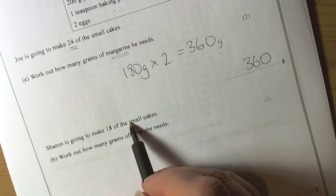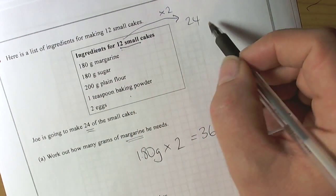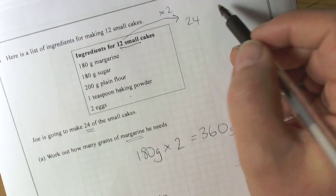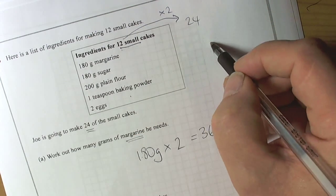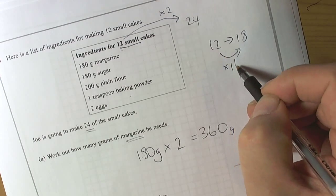Sharon is going to be making 18 cakes. So we are going to now look for a multiple of 12 like this is 18. Well we have lots of ways of thinking about this. We could say 12 to 18 is the same as multiplying by one and a half.